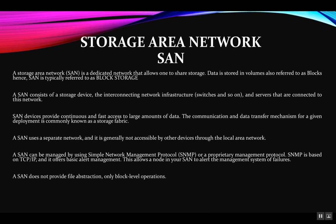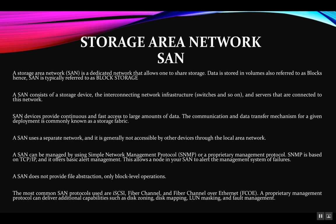A SAN does not provide file abstraction — it only provides block-level operations. For file-level abstractions, we have NAS. The most common SAN protocols are iSCSI, fiber channel, and fiber channel over Ethernet. A proprietary management protocol can deliver additional capabilities such as disk zoning, mapping, masking, and fault management. Disk zoning is basically creating a dedicated network for the storage device and the server to communicate, while masking and mapping capabilities bring everything together to create this infrastructure for SAN to talk with a particular server or computer.